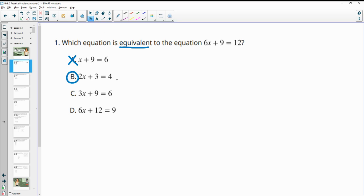For C, we divided by 2 to the 6x. Dividing the 9 by 2 would give us 4.5, and this one stayed the same, so that's not going to be good.